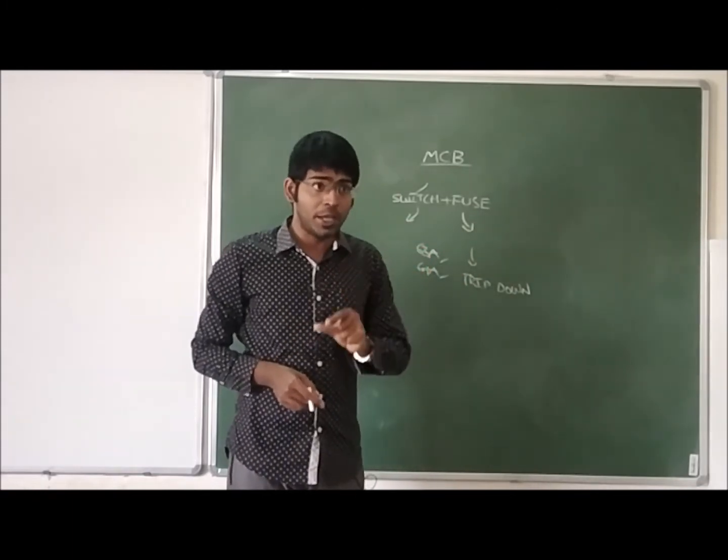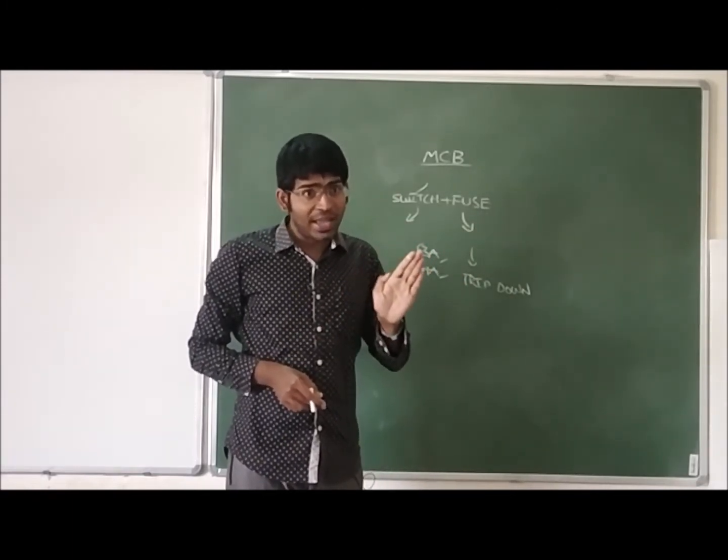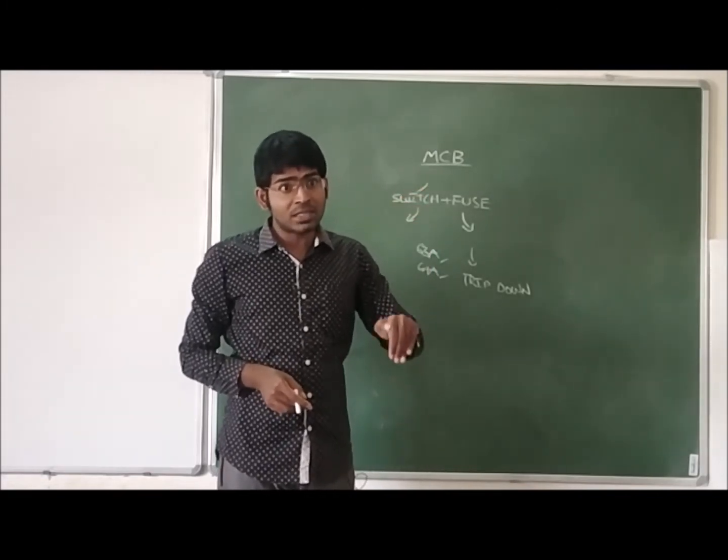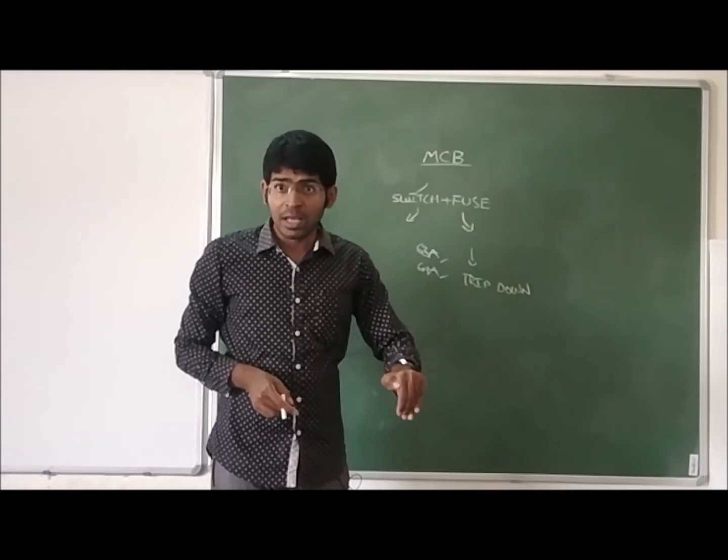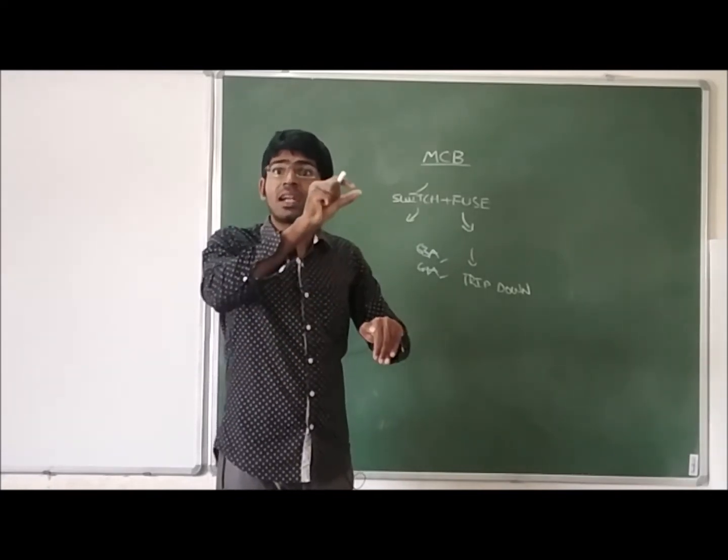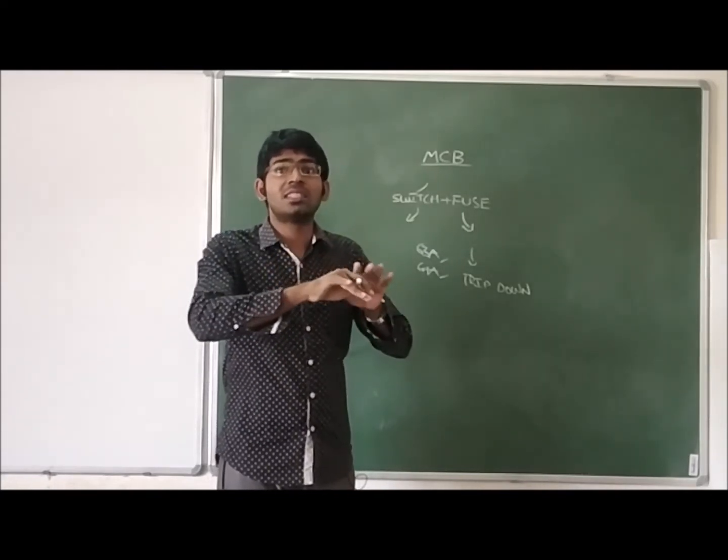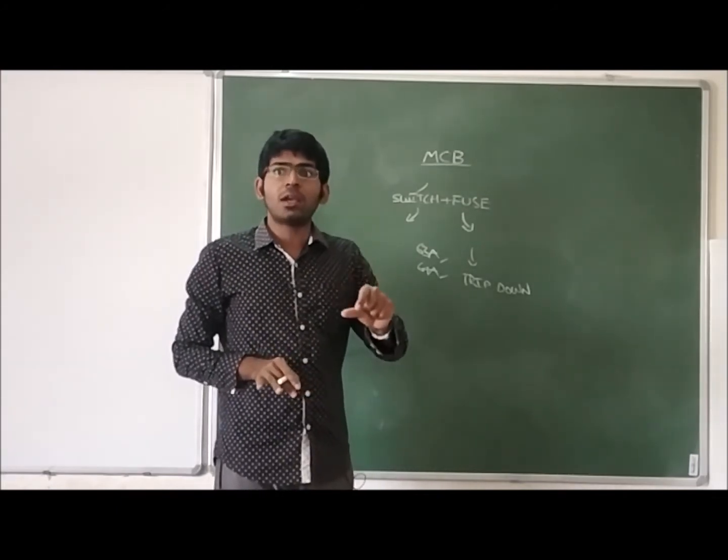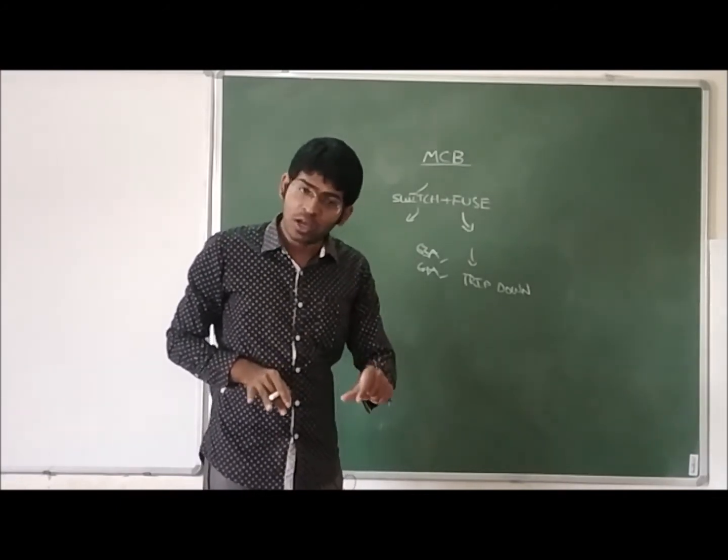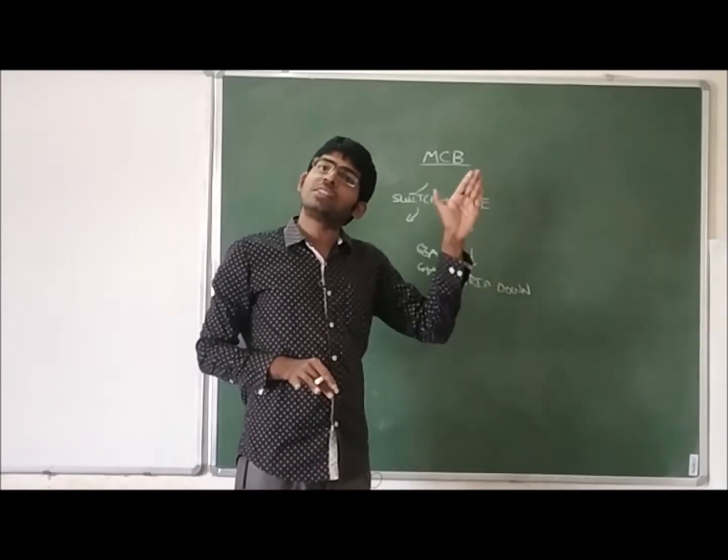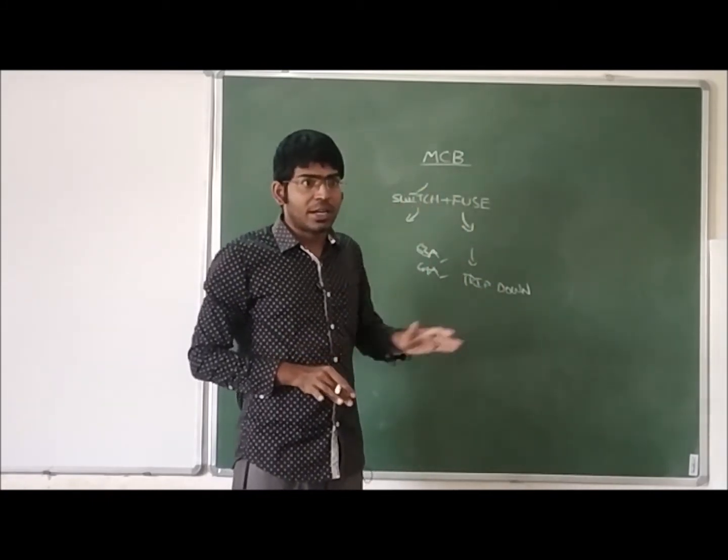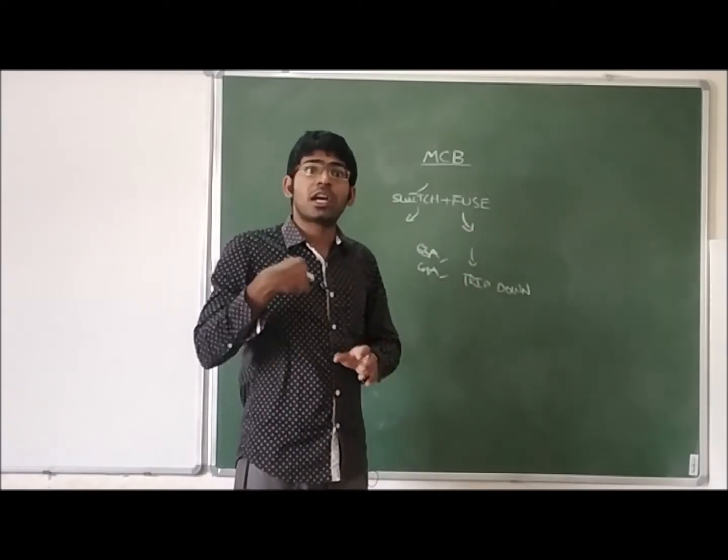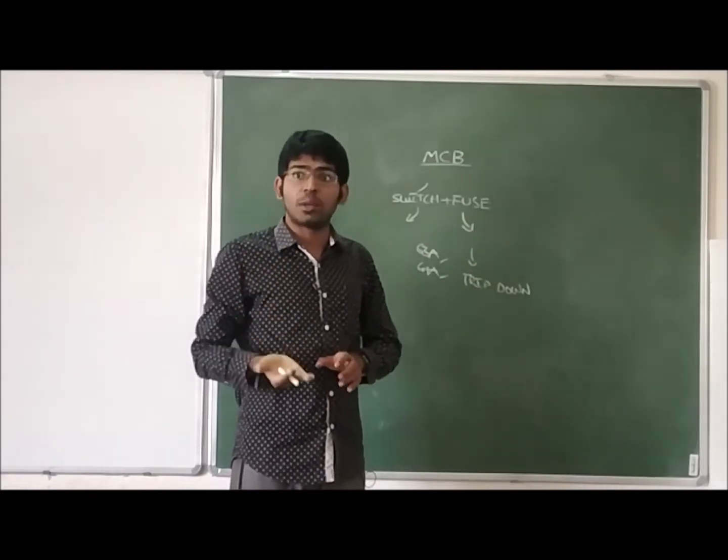There is a spring in the MCB. That spring makes the MCB trip down. Because the MCB is tripped down, the supply is not connected to the load and it is in the off condition. Trip down process is observed only when over current is observed.